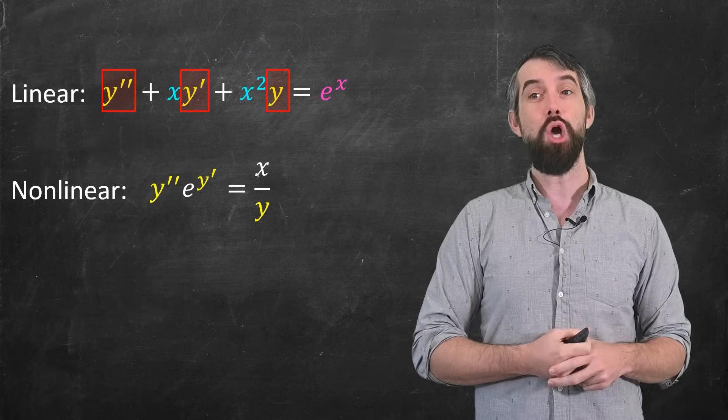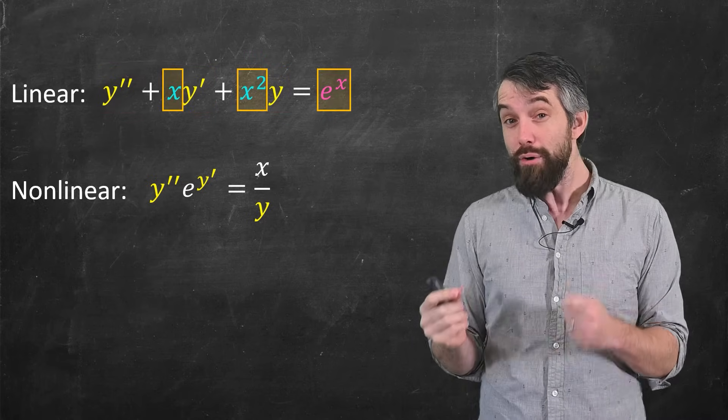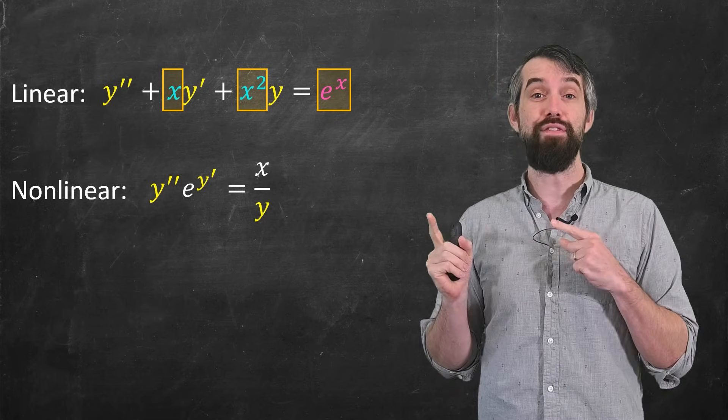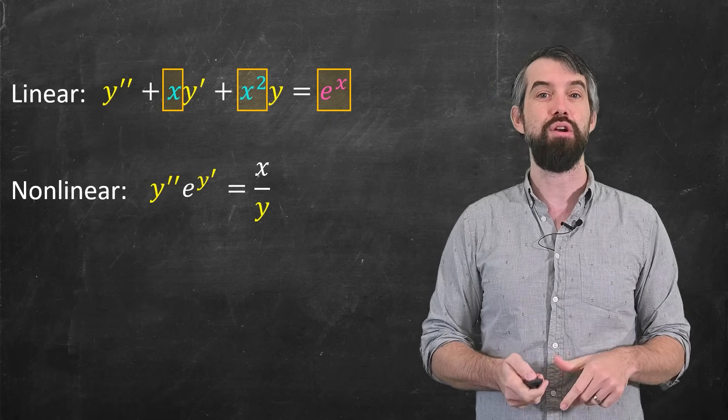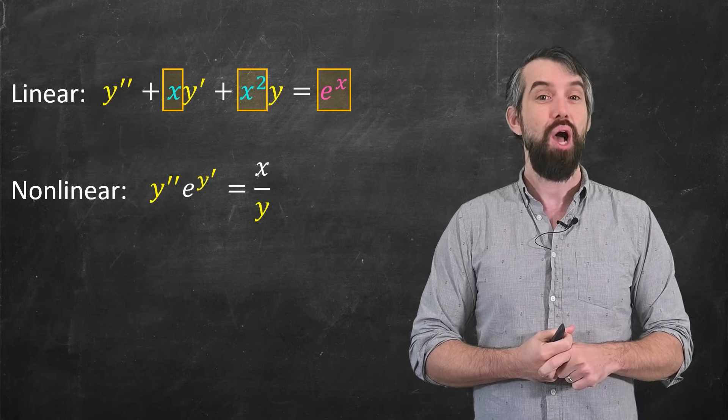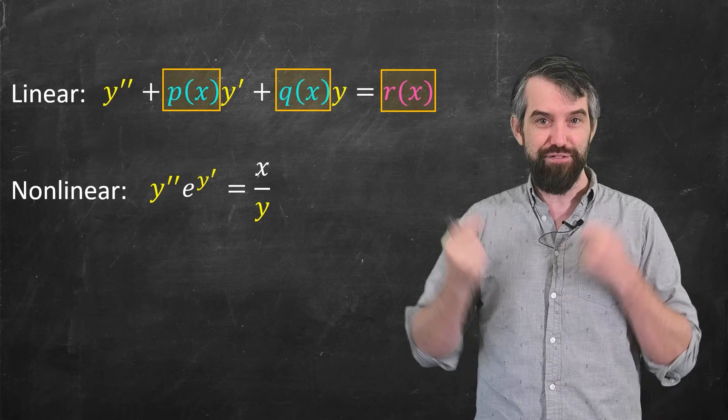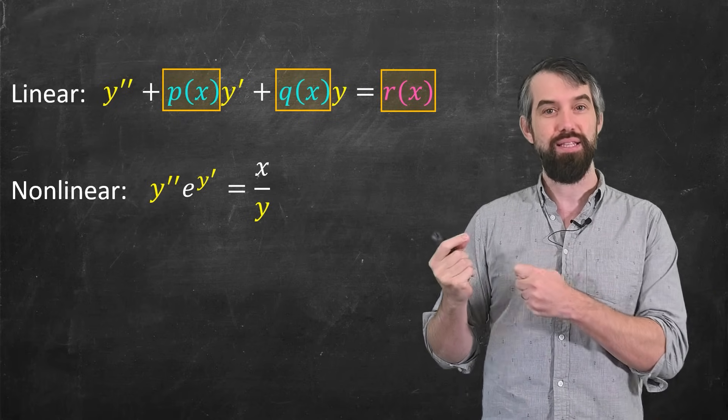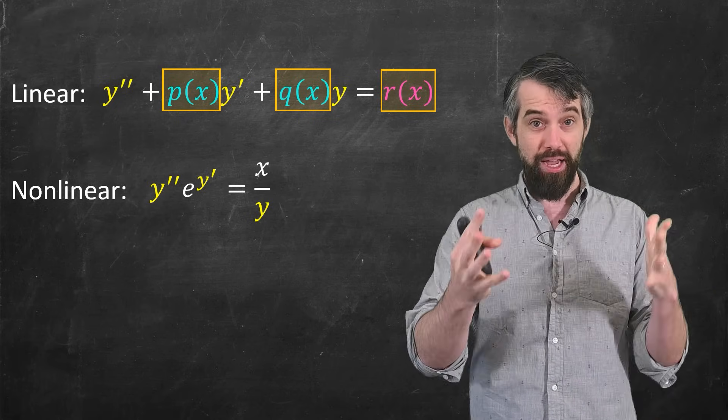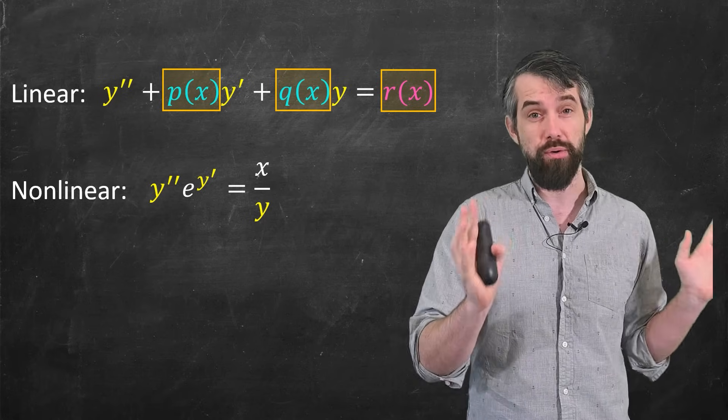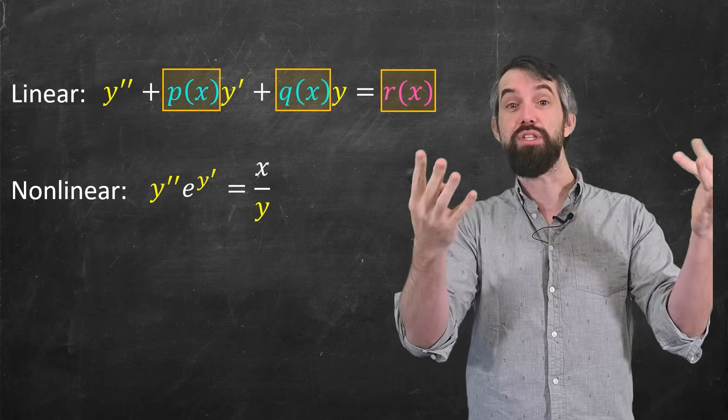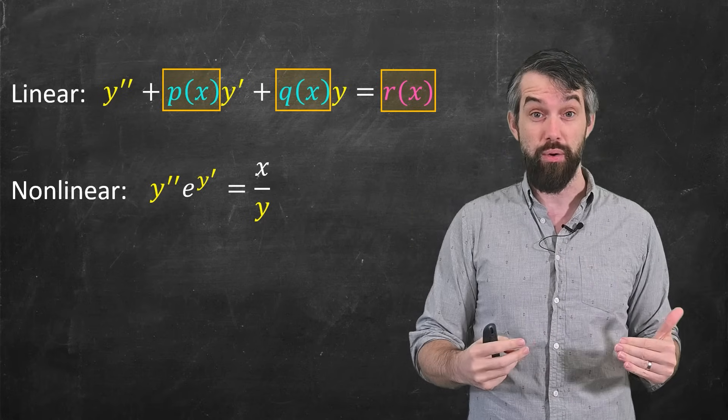And then there's allowed to be coefficients, and those coefficients can be functions but only of x. So in general, a linear equation that's second order would be like y double prime plus some function of x times y prime plus a function of x times y is equal to the function of x. Again, heuristically, it's not always true, but heuristically, linear equations are easier than nonlinear equations.